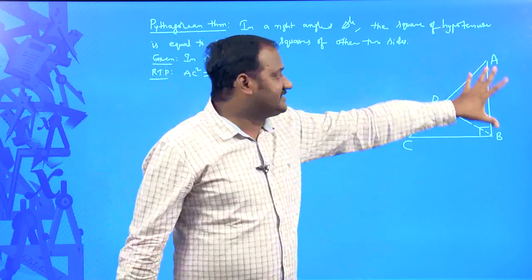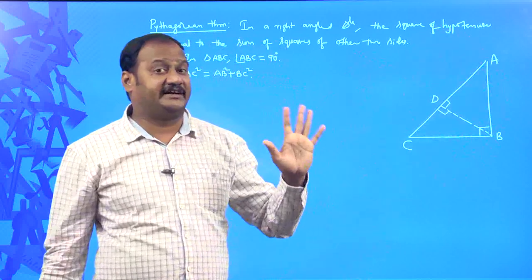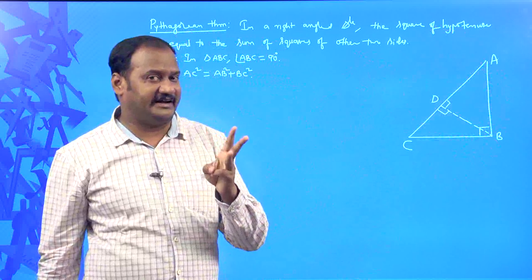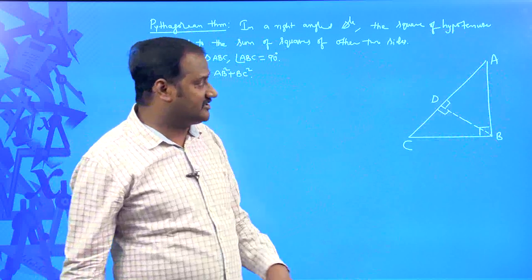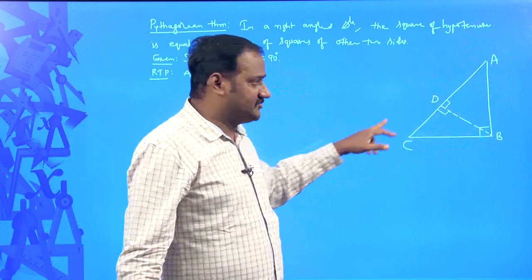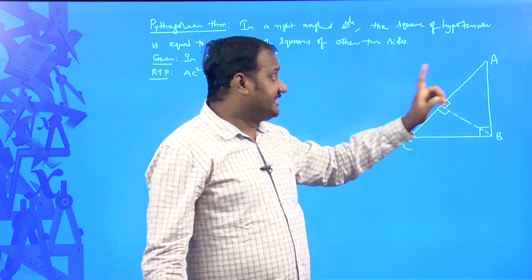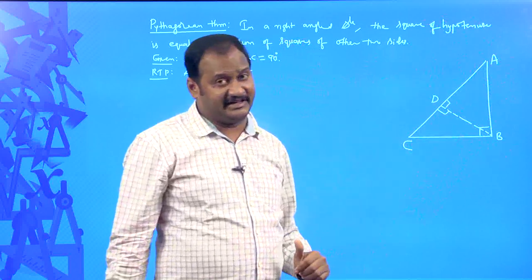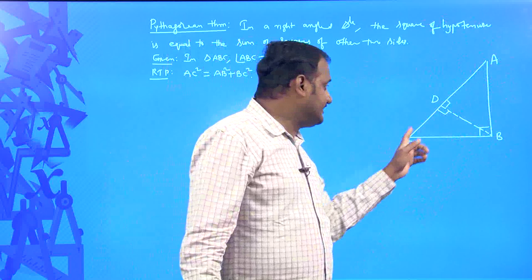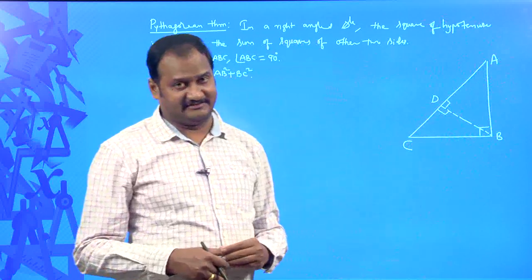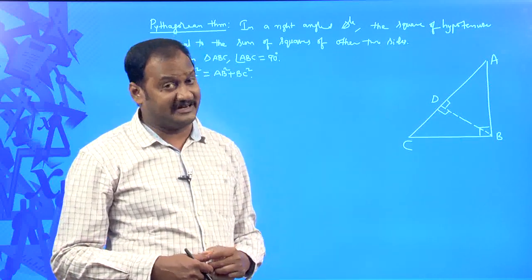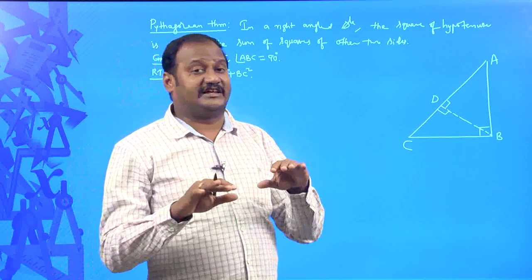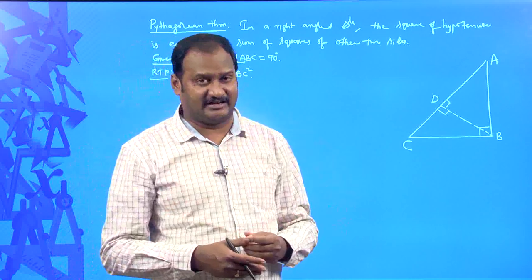So, in this picture, we have totally how many right angle triangles? There are three right angle triangles. What are those three? The first is triangle ABC. The second is triangle ADB. The third is triangle CDB. Now, your primary task is to check whether those triangles are similar to each other or not.